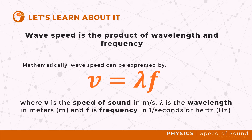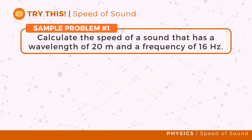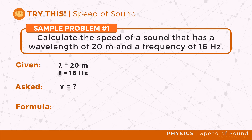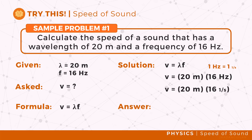To better understand this, let's try this example. Calculate the speed of a sound that has a wavelength of 20 meters and a frequency of 16 hertz. We can use the GAFSA method to solve this. The given values are wavelength of 20 meters and frequency of 16 hertz. We are asked to calculate the speed of sound using the formula V equals lambda F. By substituting the values, we compute the speed of sound, which is equal to 320 meters per second.